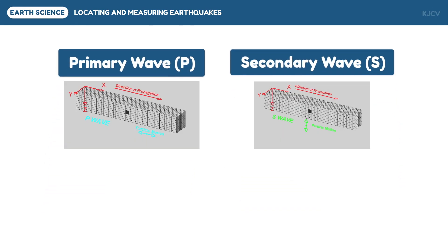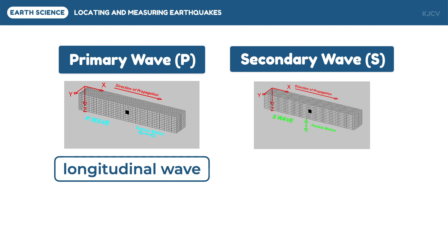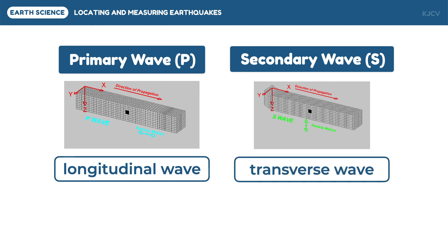These two types of waves can be analyzed like how toy slinkies behave. If a slinky is being pushed and pulled, it depicts the longitudinal motion of primary waves. But if a slinky is played vertically, it depicts the transverse motion of secondary waves.